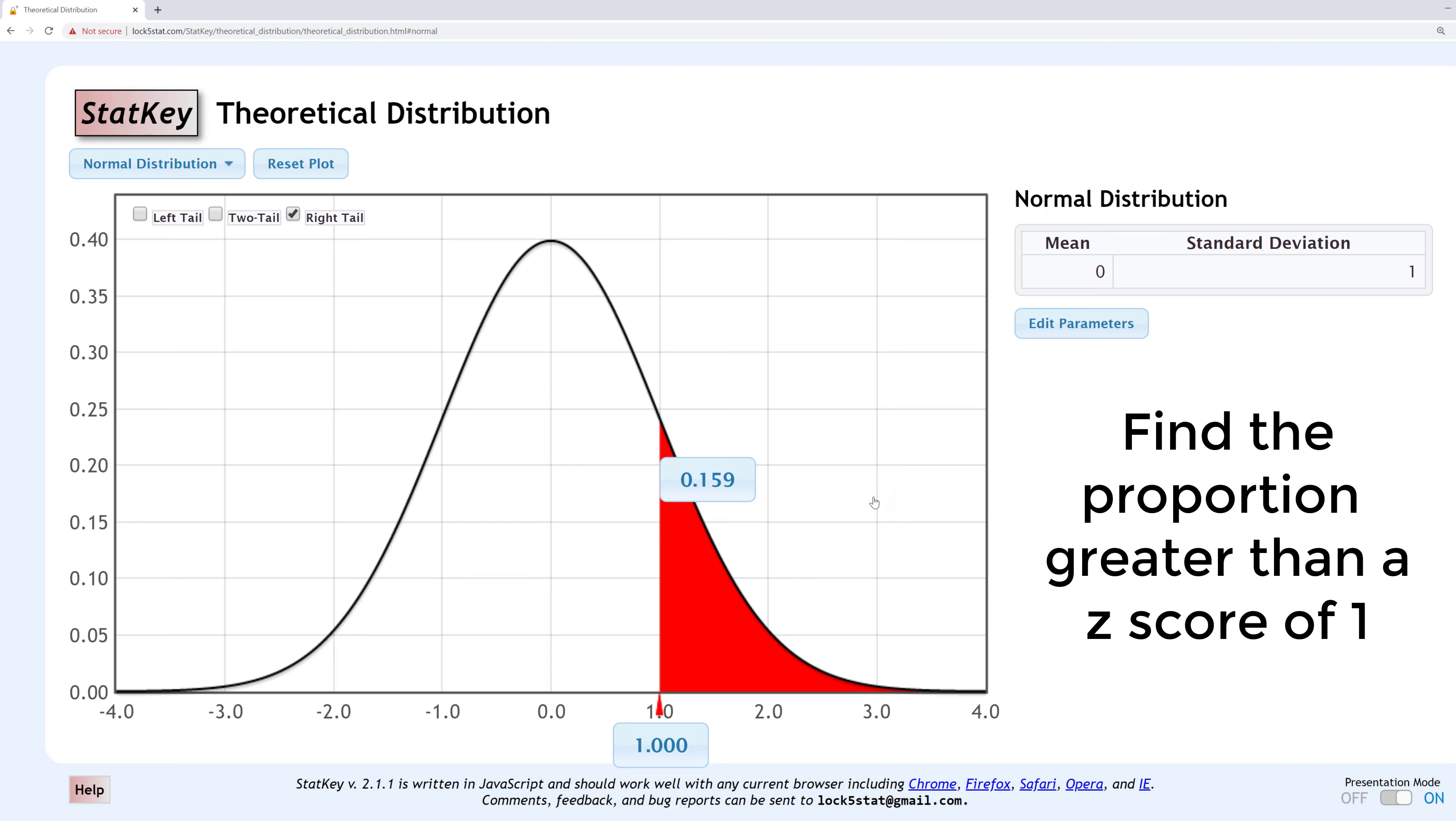Now the area in red is the area greater than a Z score of 1. The number in the blue box above it is the proportion. Here the proportion of the Z distribution greater than 1 is 0.159 or 15.9%.